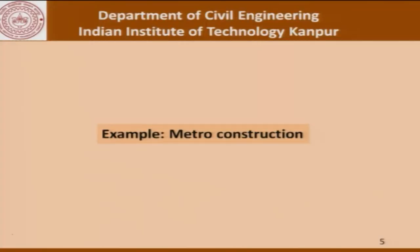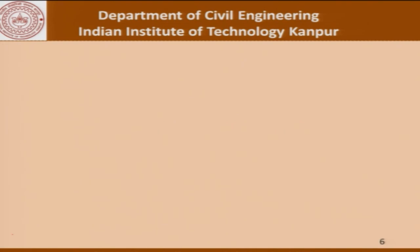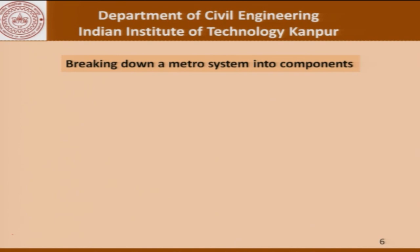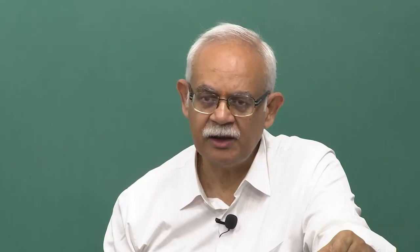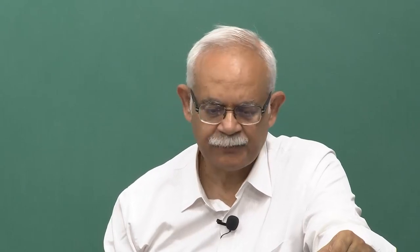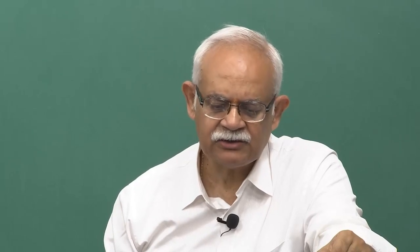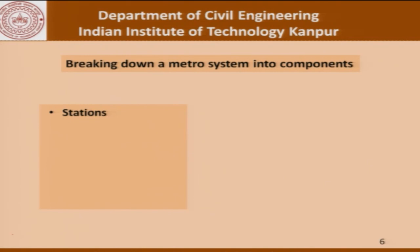Getting back to our example for today, which is metros — it would be easier if we break down a metro system into components and then try to see what kind of expertise would be required to implement a particular part of the construction. One way is to look at the different components in terms of stations, where metros or trains come and stay for a certain amount of time. The issues that go into planning a metro station include movement of passengers coming in and going out, and the movement of trains coming in and going out.